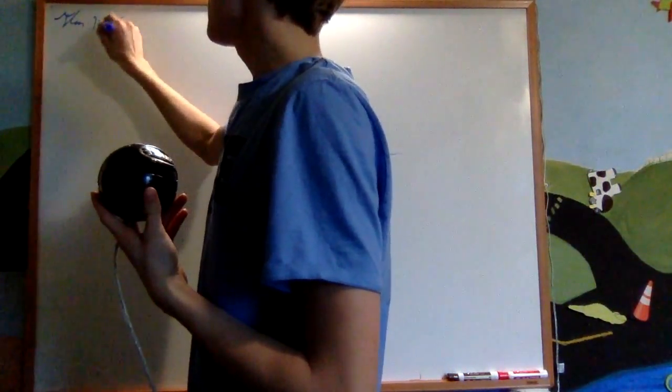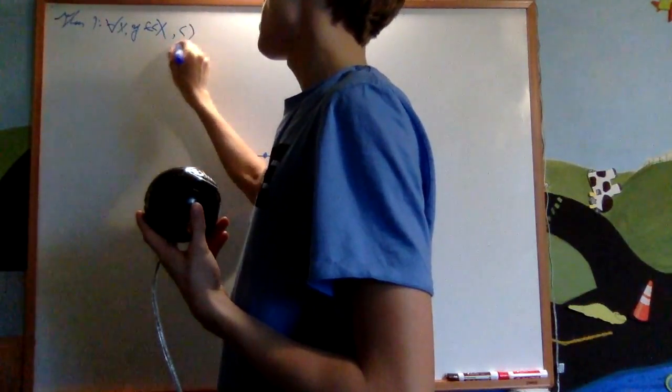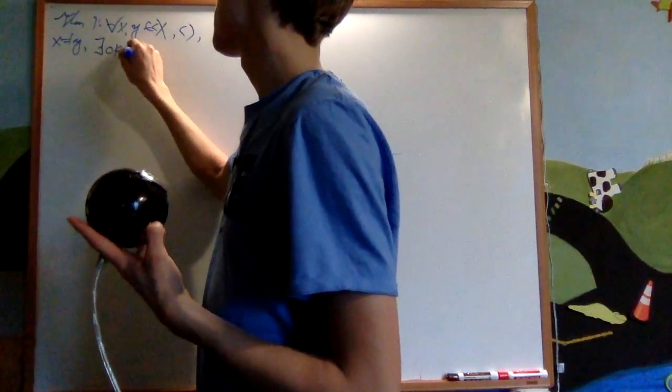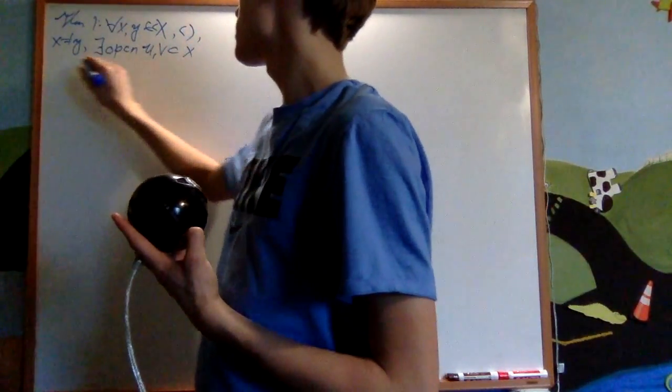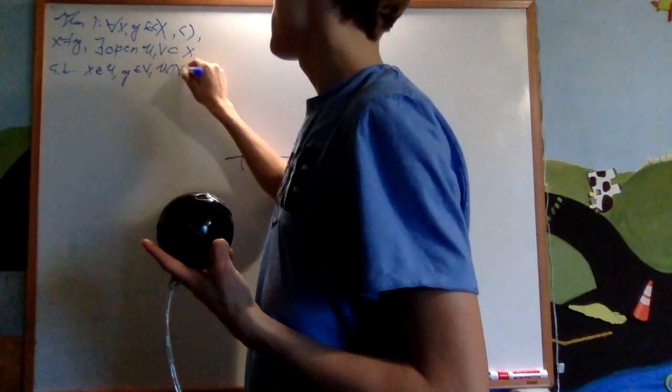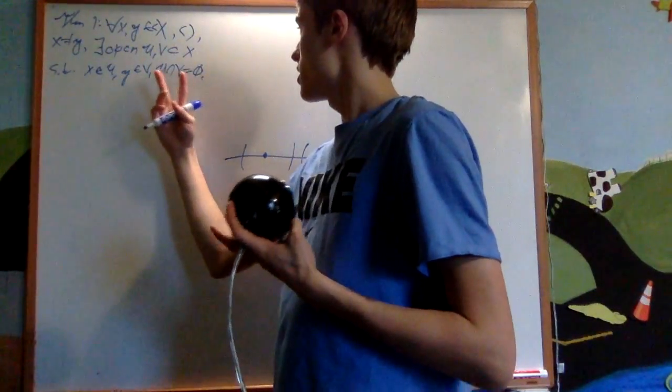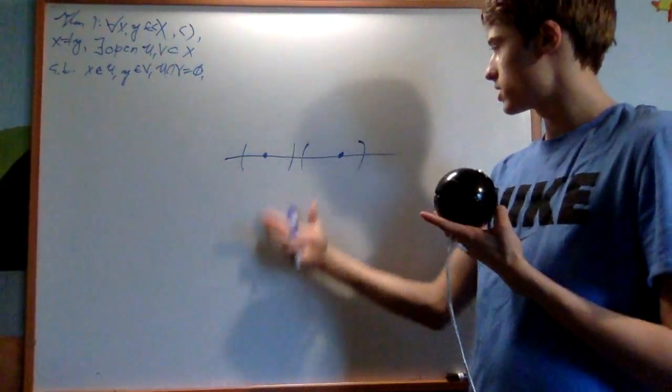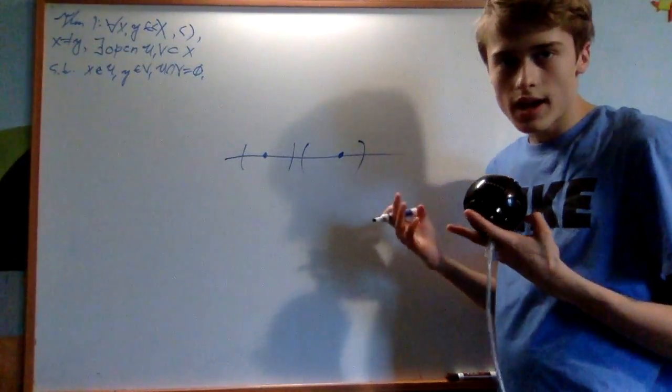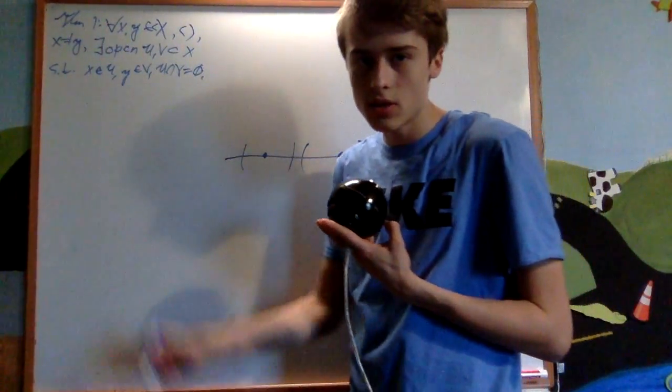Let's prove this. First theorem is that for any x and y, an element of this X, which is given the order topology, such that x is not equal to y, there exists open U and V subsets of X, such that x is in U, y is in V, and U intersect V is the empty set. So for any two points in an order topology that are distinct, there exist open sets that contain them and are disjoint, which is this idea. Now this idea gives us a lot of structure. It's actually a very important property, and I will discuss it much more in the future.